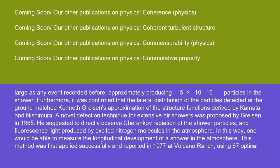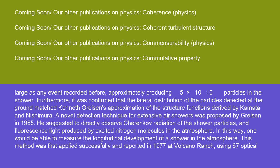A novel detection technique for extensive air showers was proposed by Greisen in 1965. He suggested to directly observe Cherenkov radiation of the shower particles and fluorescence light produced by excited nitrogen molecules in the atmosphere. In this way, one would be able to measure the longitudinal development of a shower in the atmosphere. This method was first applied successfully and reported in 1977 at Volcano Ranch using 67 optical modules. Volcano Ranch finished its operation shortly after due to lack of funding.